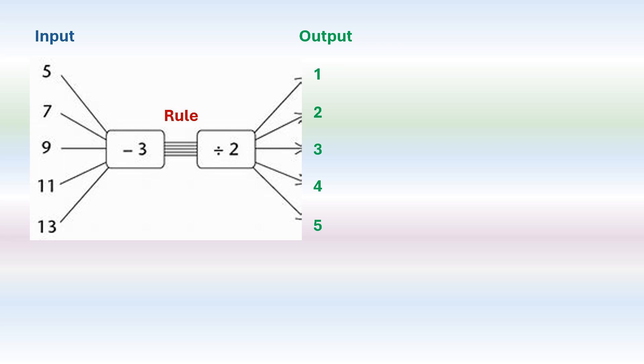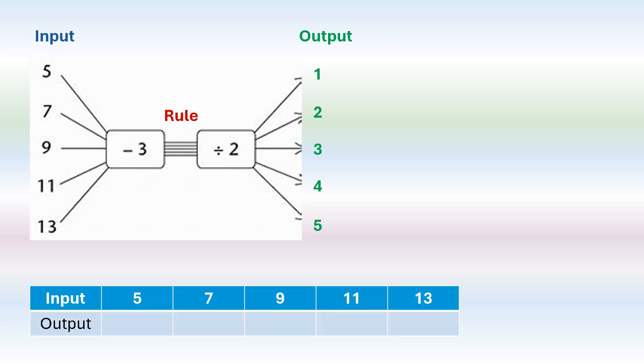Now, let's see how we can take these values, this table, and use this flow diagram and use it in a table. So the top row has the input values and the bottom row has the output values. And on top of the table, we write the rule.